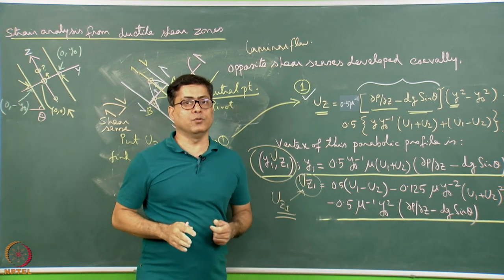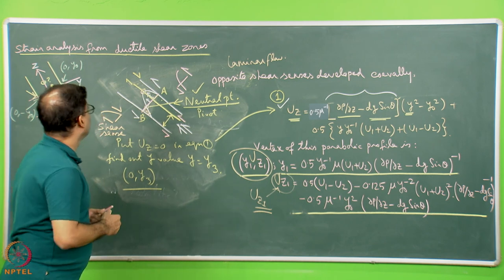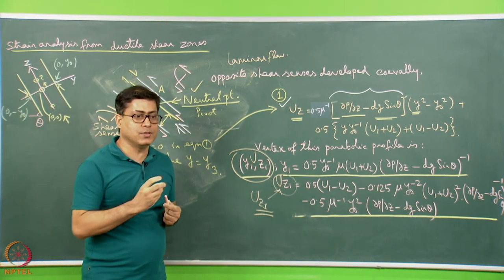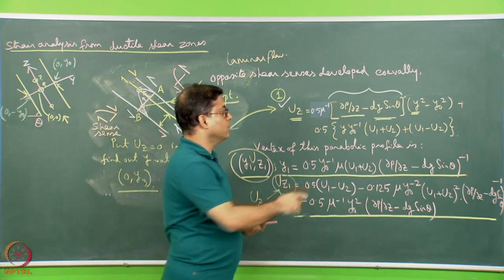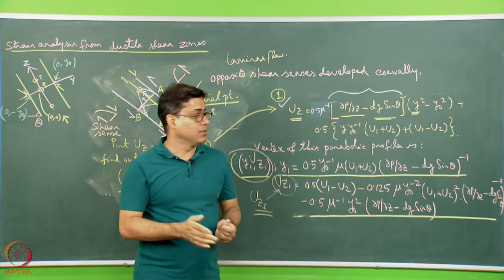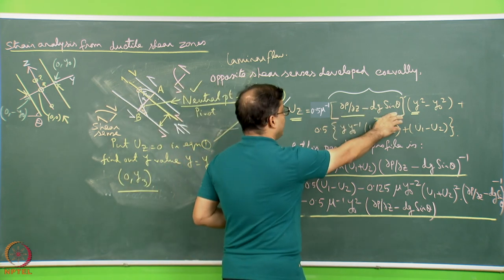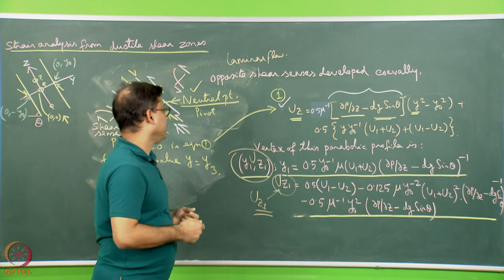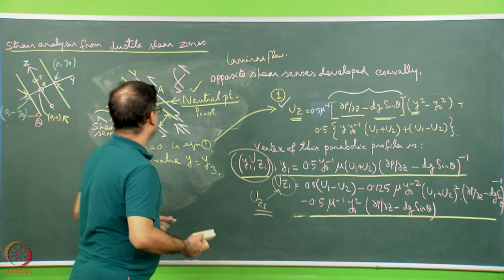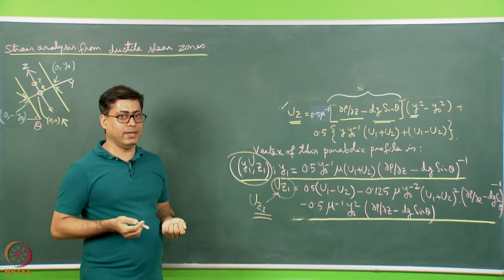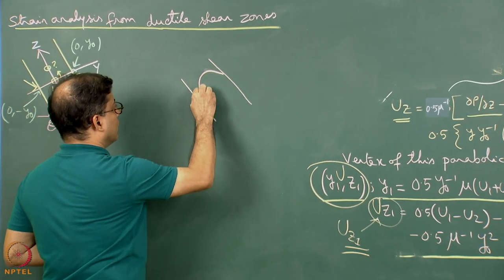With this information, it will be good to start the strain analysis of the shear zone where there can be a component of Poiseuille flow, or there may not be. If there is no Poiseuille flow component, set del P del z to 0. I may be dealing with a horizontal shear zone (θ = 0), a vertical salt dome stem (θ = 90°), or an inclined channel (θ neither 0 nor 90°), as in subduction channels. Everything can be explained with this generalized setup, and now we move to the strain analysis part.